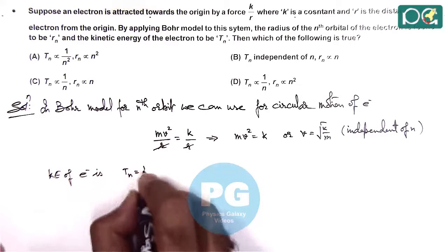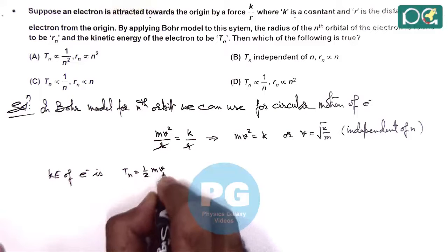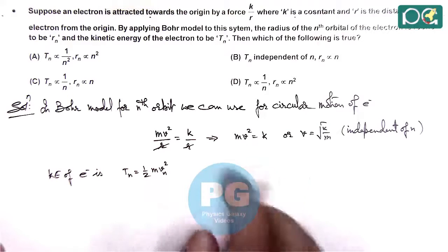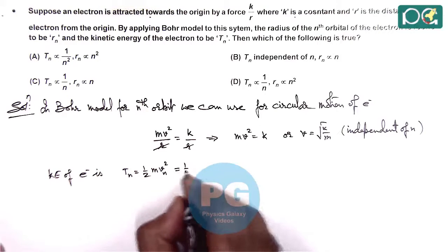That is ½mvn². And we have discussed how mv² is k, so the value we are getting is ½k.